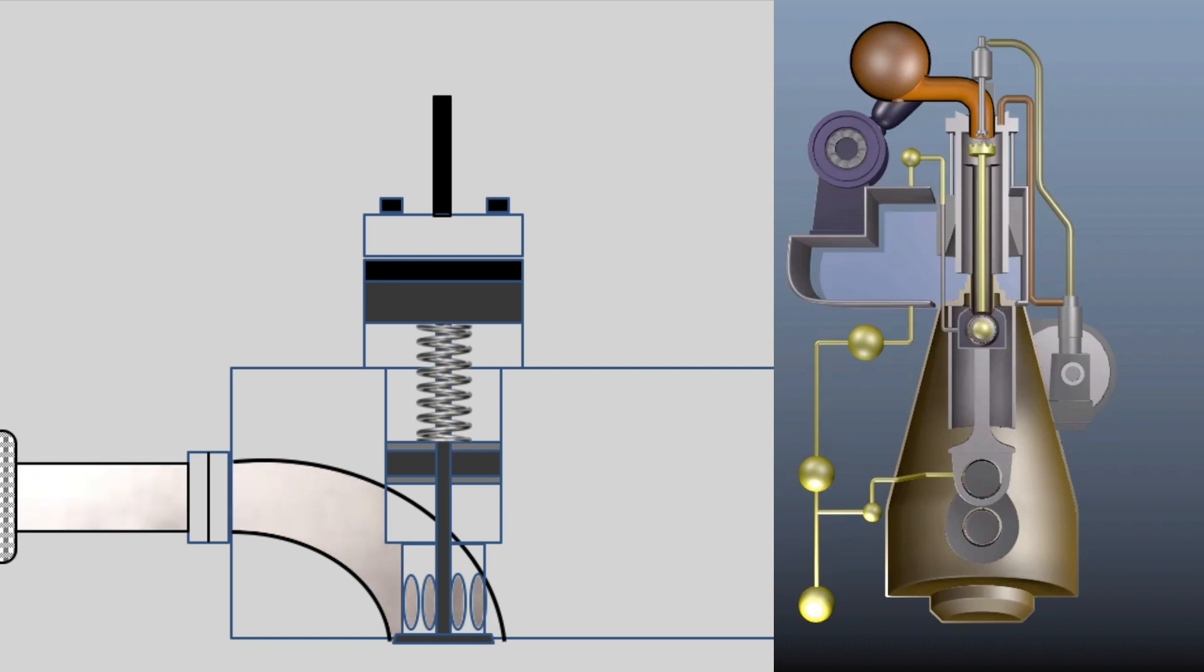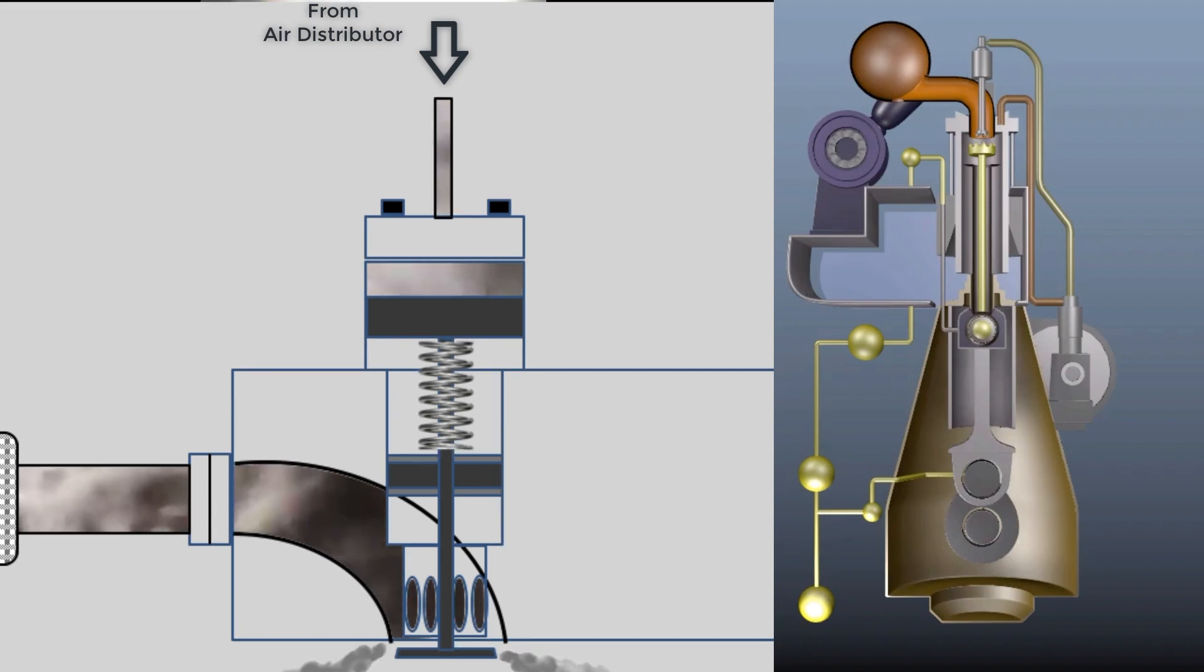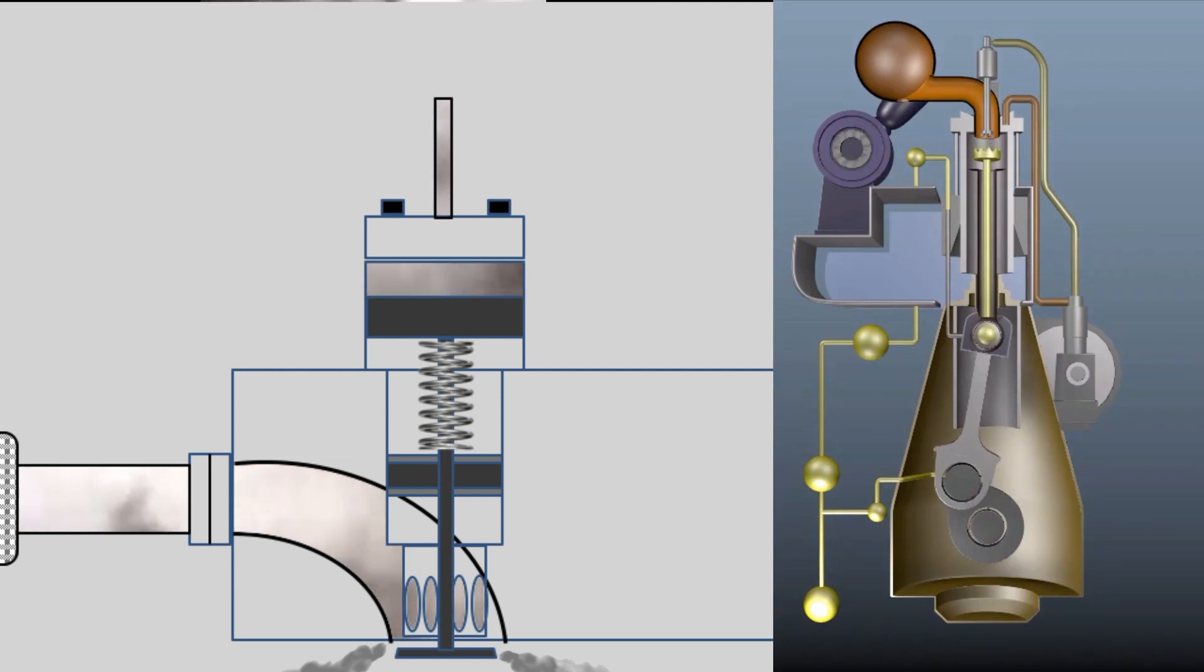To open the valve, the air distributor supplies air at 30 bar which enters the starting air valve from top of the valve body. This pressure acting on top will overcome the spring force which was holding the valve shut and opens the valve, leading to high pressure air entering the combustion chamber and moving the piston down.